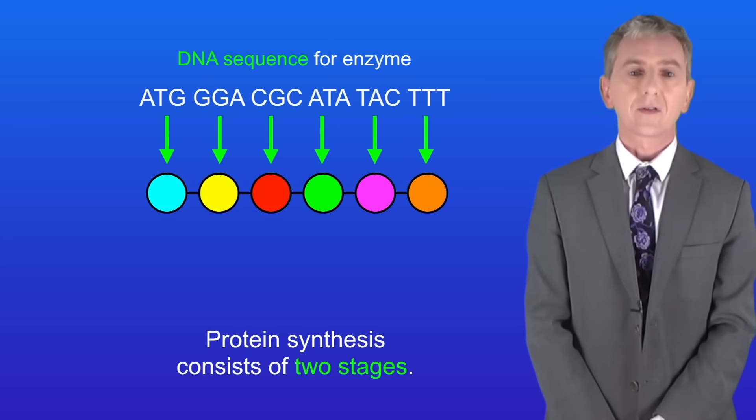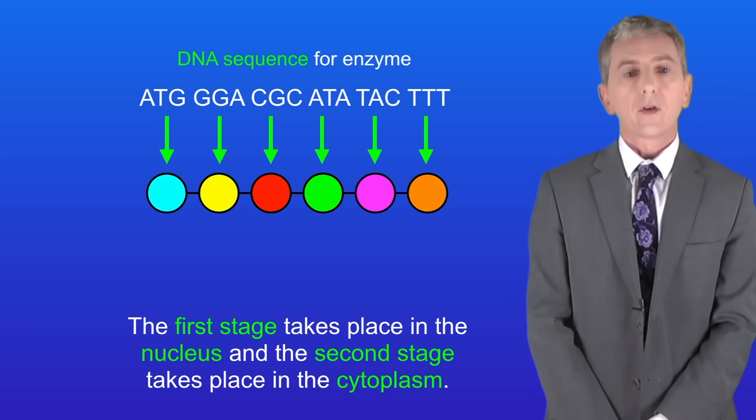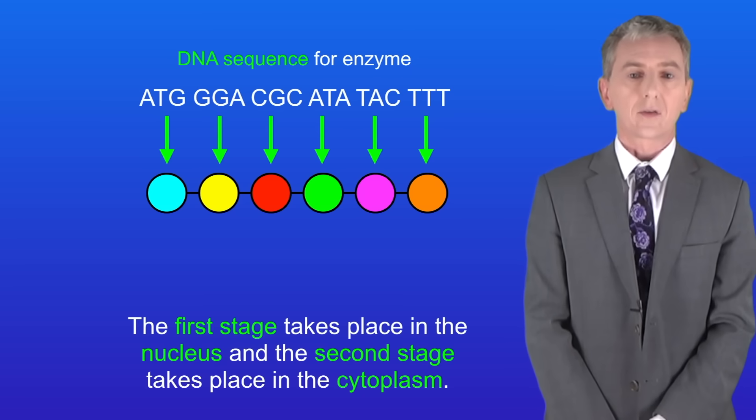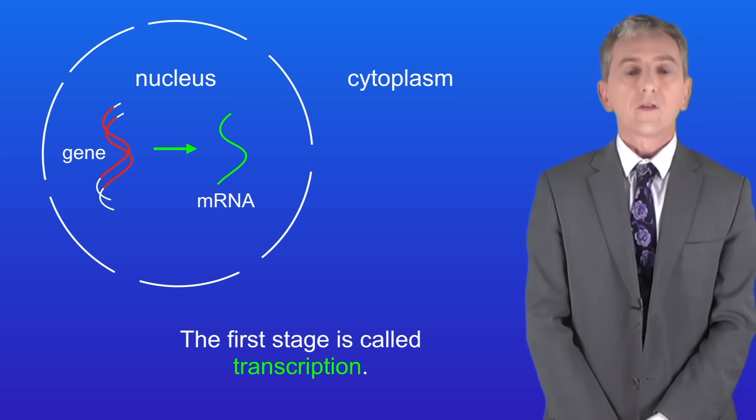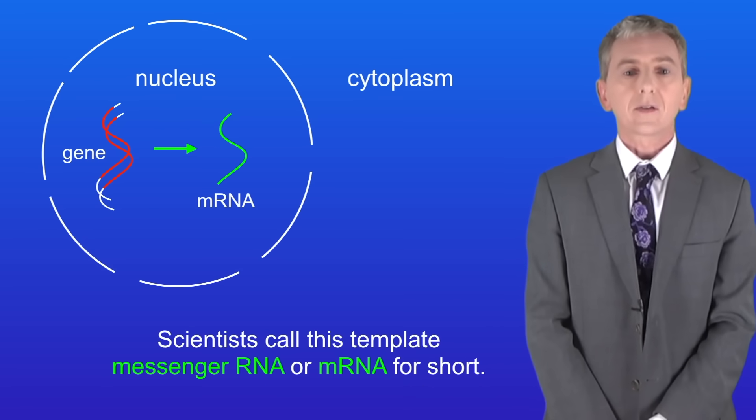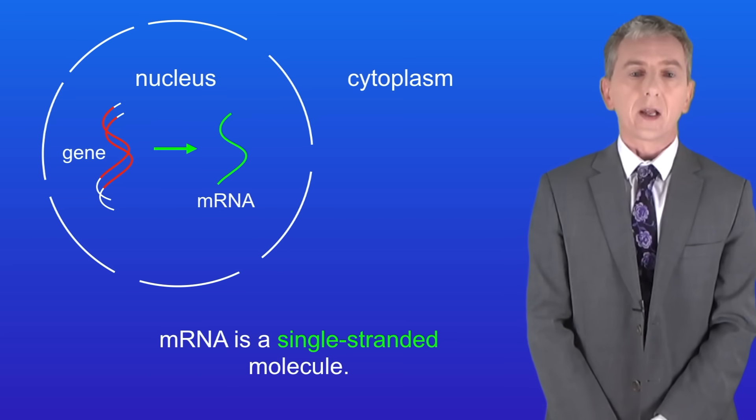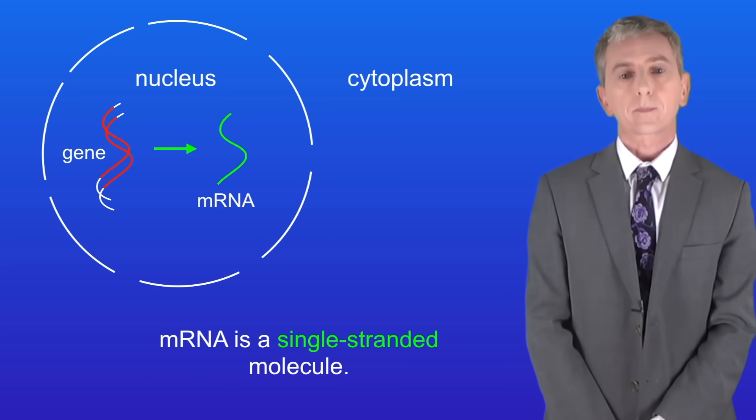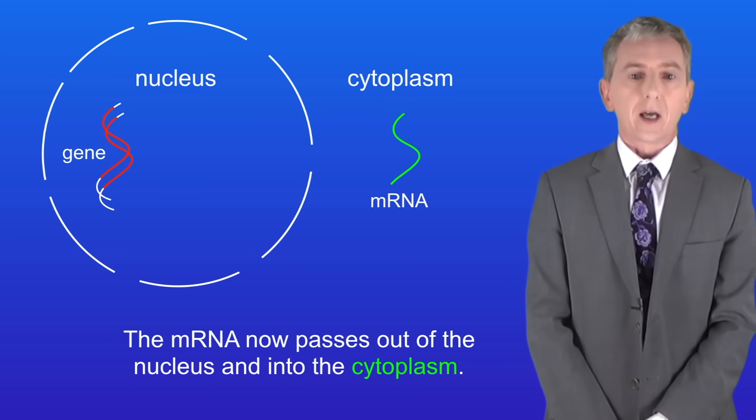Okay, now protein synthesis consists of two stages. The first stage takes place in the nucleus and the second stage takes place in the cytoplasm. The first stage is called transcription. In this stage, the base sequence of the gene is copied into a complementary template molecule. Scientists call this template messenger RNA, or mRNA for short. You'll notice that mRNA is a single-stranded molecule. The mRNA now passes out of the nucleus and into the cytoplasm.